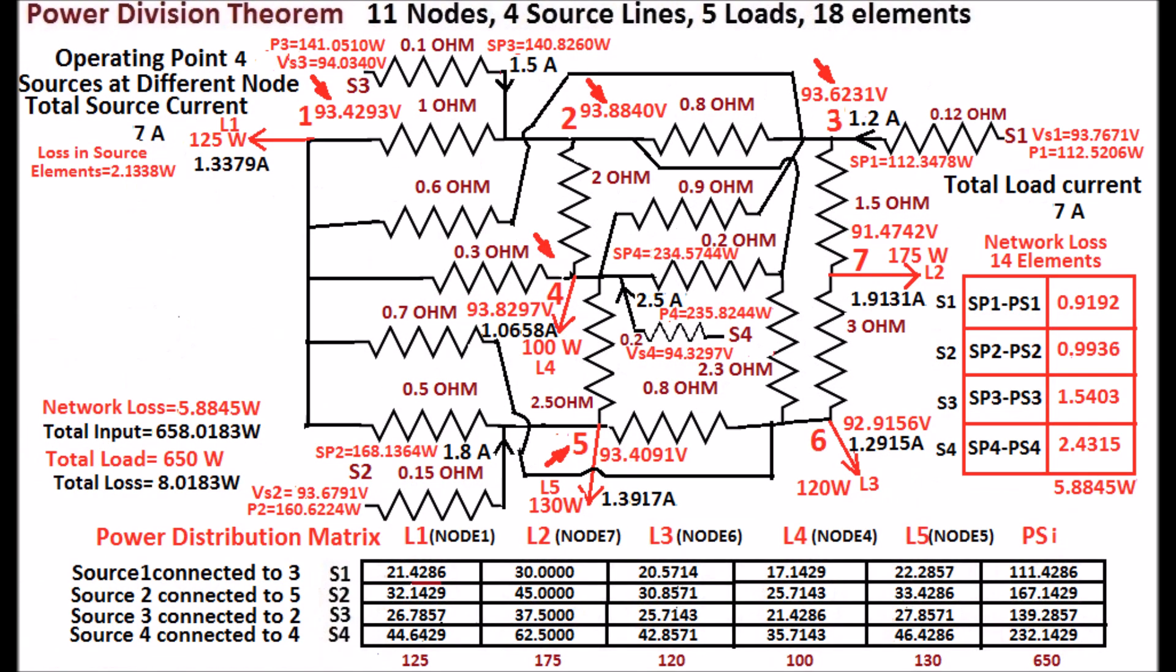Network voltages, load currents, and network losses are changed. The network loss is 5.8845 watts as shown in the display for the same load of 650 watts.